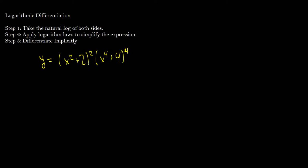So take the natural log of both sides. Okay, let's do that. Take the log of y is equal to the ln of this whole big thing here, x squared plus 2 all squared multiplied by x to the 4th plus 4 all to the 4.